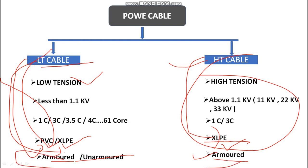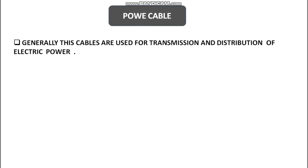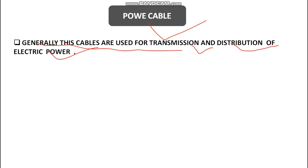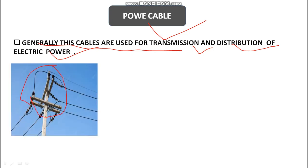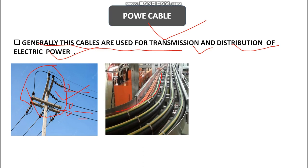Regarding power cable applications: these cables are generally used in transmission and distribution of electrical power. As you can see here, these are three-phase cables and single-core cables used in transmission lines. In buildings or in industry we also use power cables — this could be HT or LT cable.